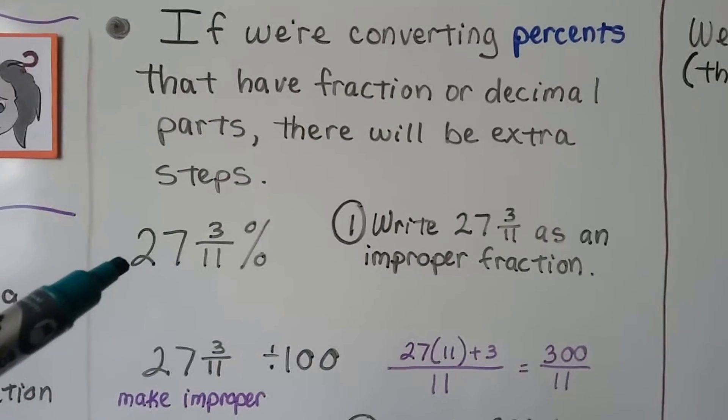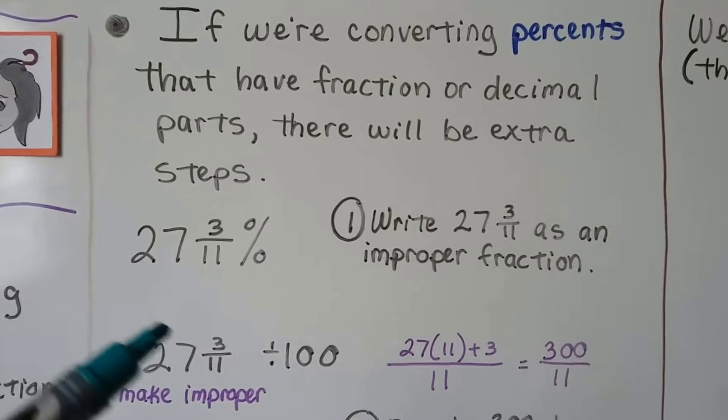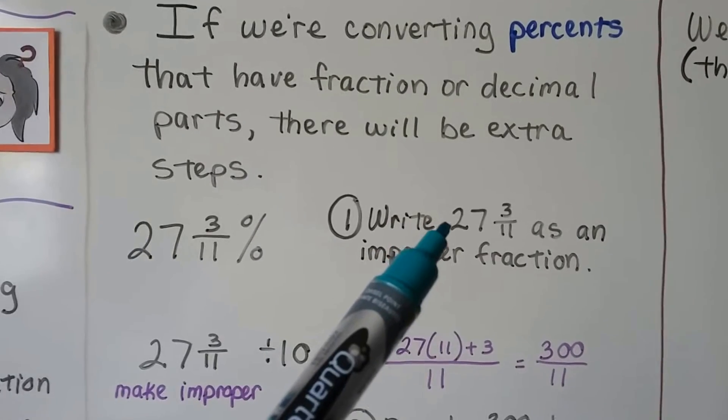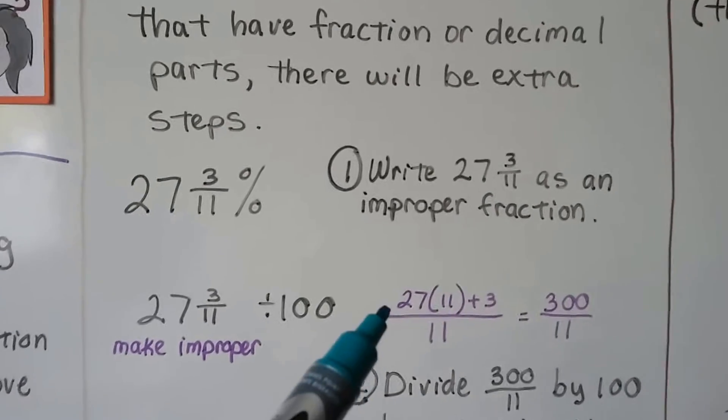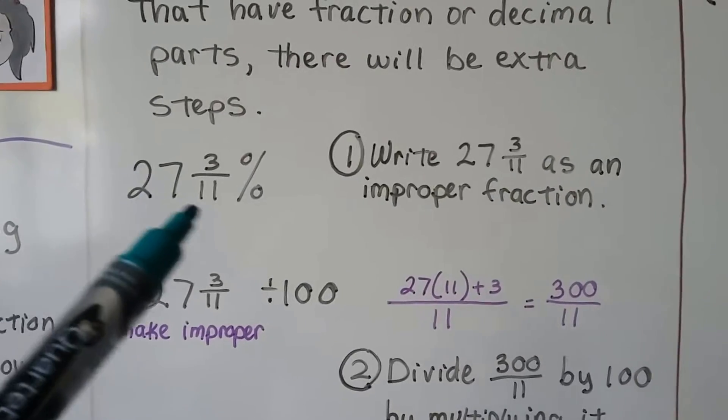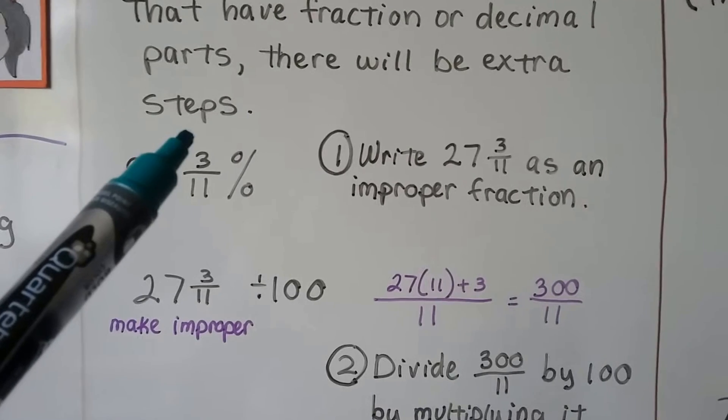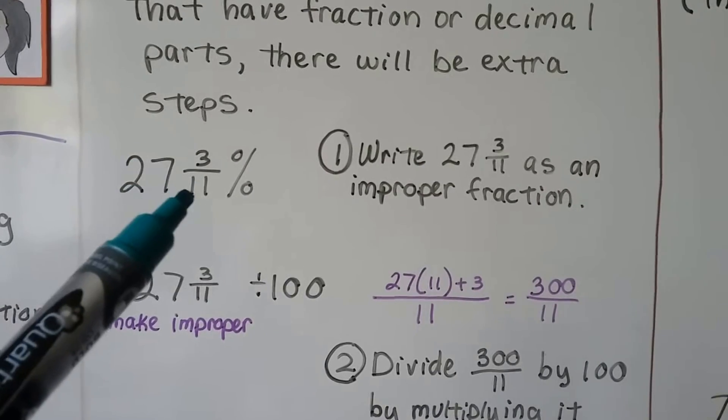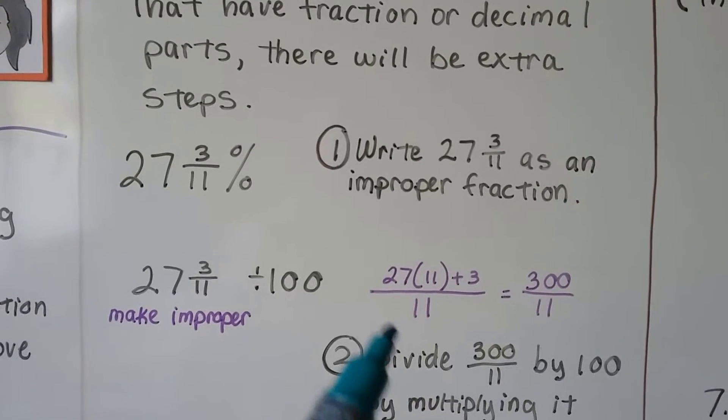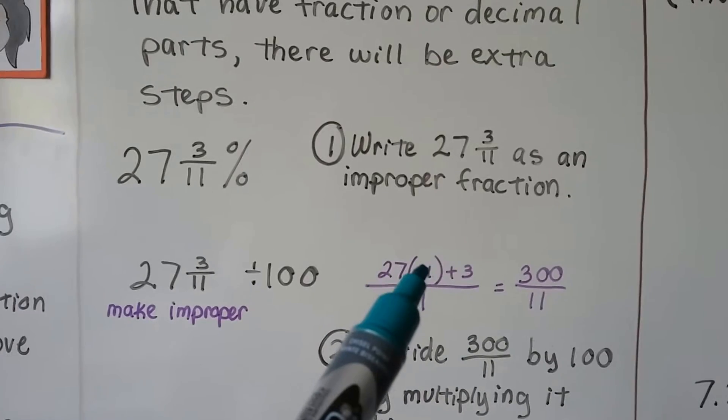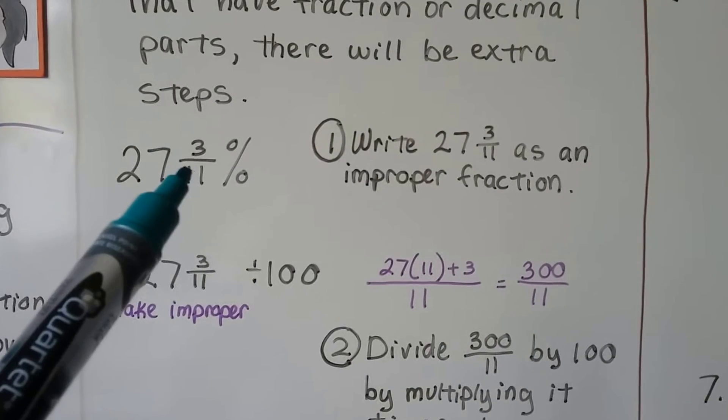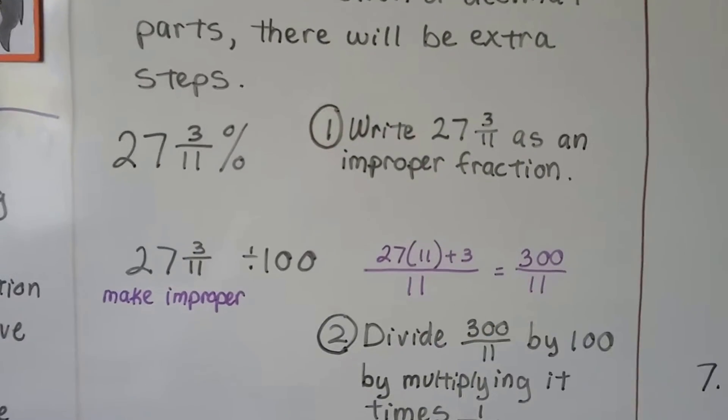If you have 27 and 3 elevenths percent, we write 27 and 3 elevenths as an improper fraction. So that means we have to do 27 times 11 plus the 3, and then that's the numerator over that 11 denominator. So we have to do 27 times 11 plus 3. That comes out to 297 plus 3 is 300. It's going to be over our current denominator, 11.